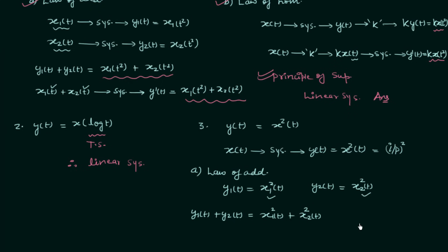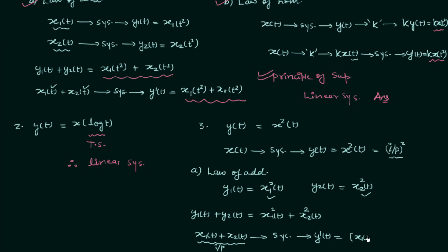Comparing the two results: x1²(t) + x2²(t) is not equal to [x1(t) + x2(t)]². They are not the same, so the system does not follow the law of additivity. Since it fails the law of additivity, it does not follow the principle of superposition, and hence the system is nonlinear.